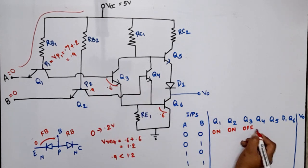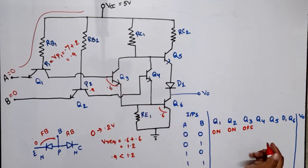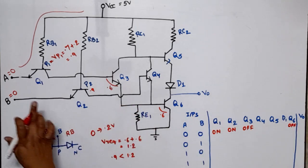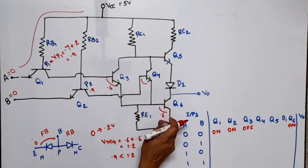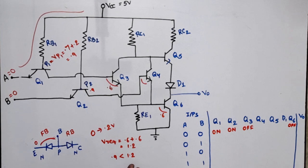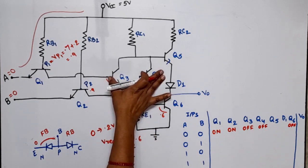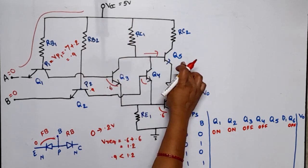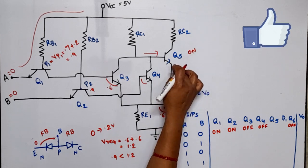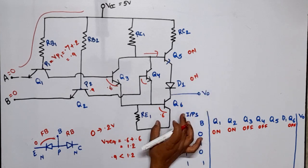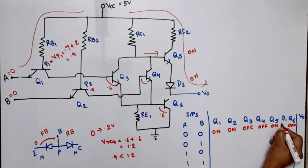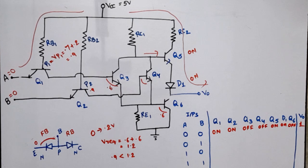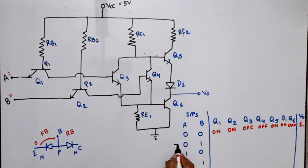Since Q3 is OFF, it behaves like an open circuit, so no current comes to Q6 — Q6 will also be OFF. Similarly for the B side: 0.9 volts is available but 1.2 volts is required, so Q4 will be OFF and Q6 will be OFF. With Q3 and Q4 as open switches, the full 5 volts is applied through the circuit. Q5 will be ON, D1 will be ON, and since Q6 is OFF (open circuit), the full voltage appears at the output. Therefore V_out is HIGH, meaning logic 1.